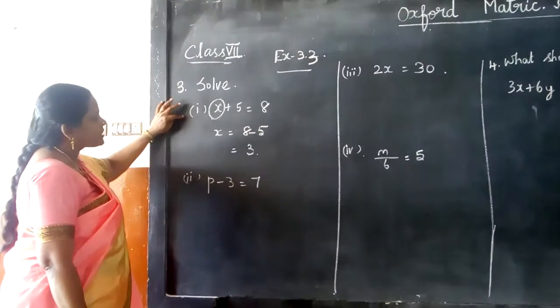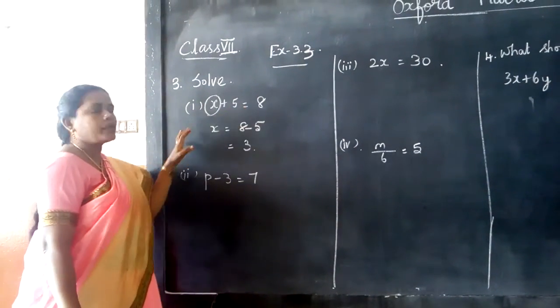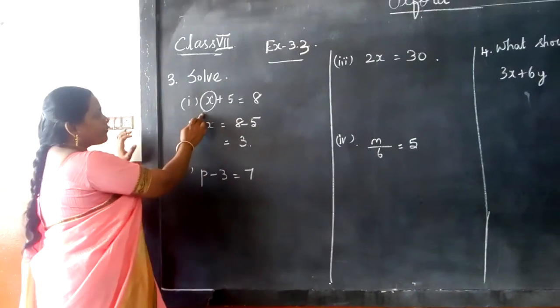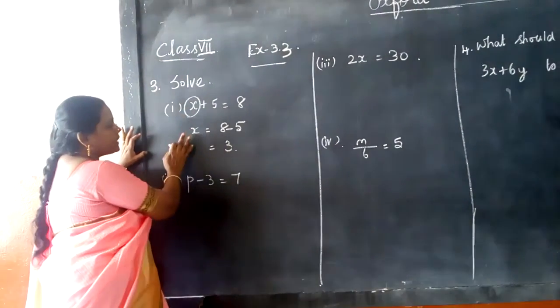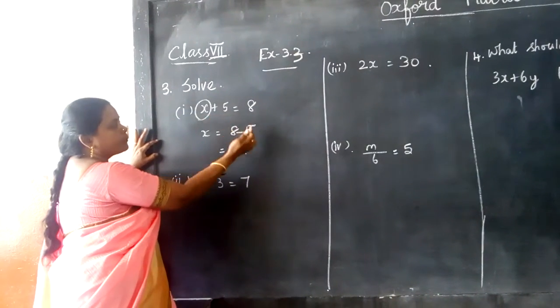The first question I am going to discuss is x plus 5 equals 8. So we have to find out what is the unknown value of x. Keep the x on this side, take this variable to that side.